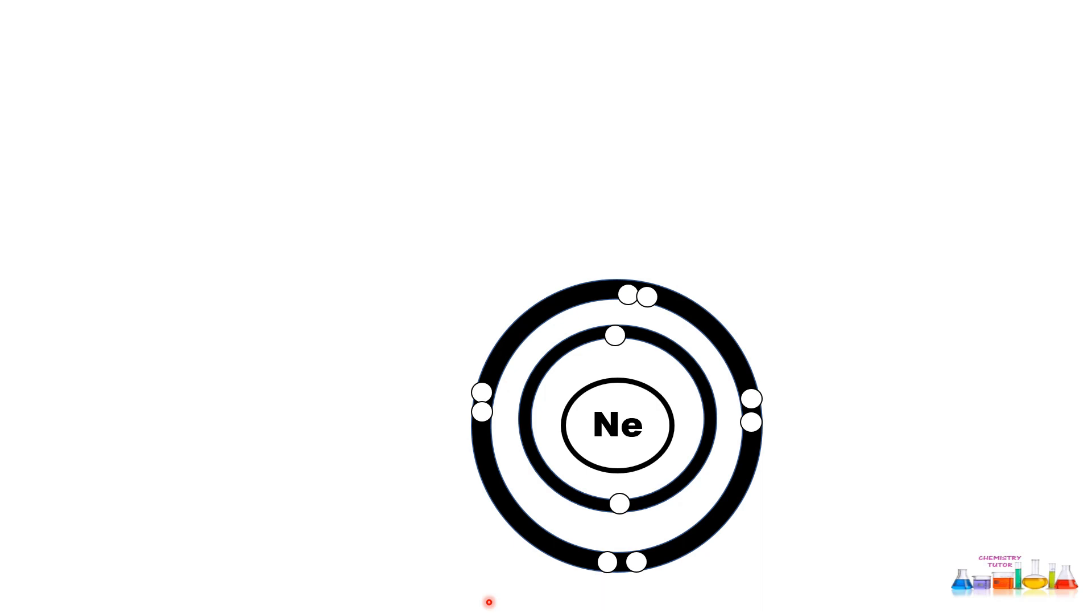These elements are sometimes called inert gases because they do not participate in chemical reactions. You can see neon, argon, and krypton: 2-8, 2-8-8, 2-8-18-8. This means that in the outer shell, eight electrons are present.